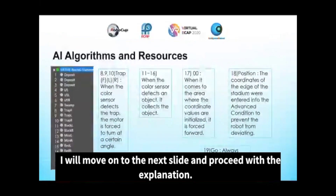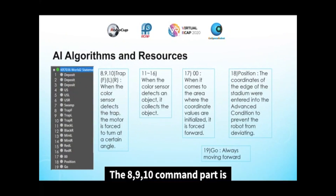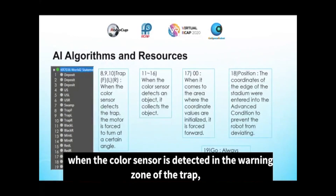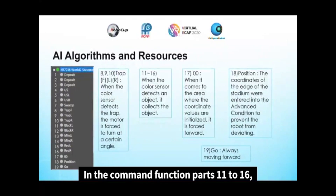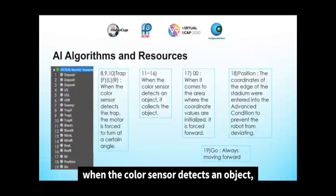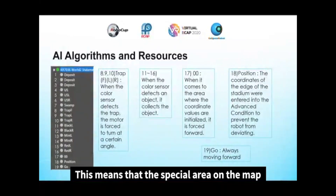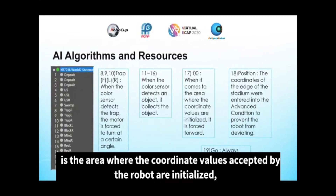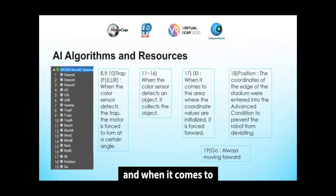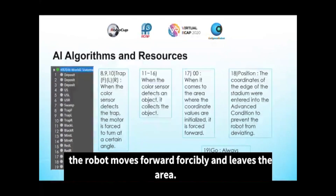I will move on to the next slide and proceed with the explanation. Commands 8, 9, and 10: when the robot sensor is detected in the warning zone of the trap, the motor rotates at a specific angle. In command function parts 11 to 16, when the color sensor detects an object, the robot collects the object. The name of the command function in 17 is 0,0. This means that the special area on the map is the area where the coordinate values accepted by the robot are neutralized, and when it comes to this area, the robot moves forward forcibly and leaves the area.